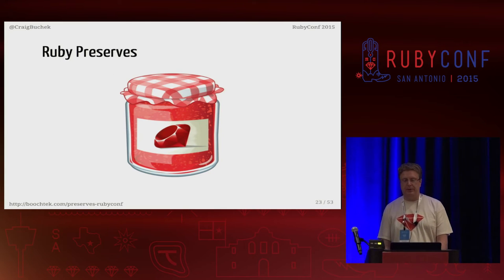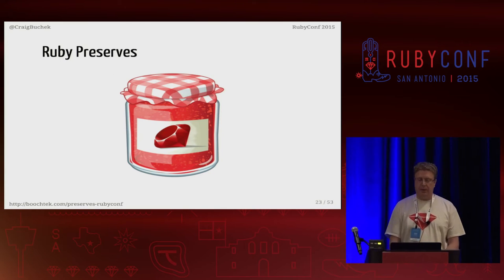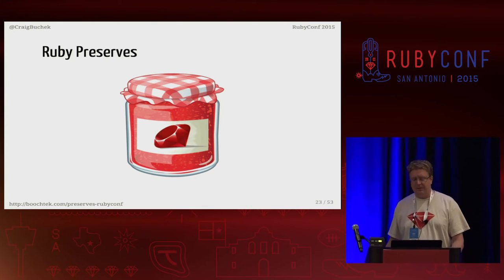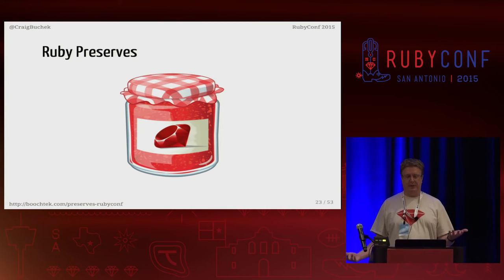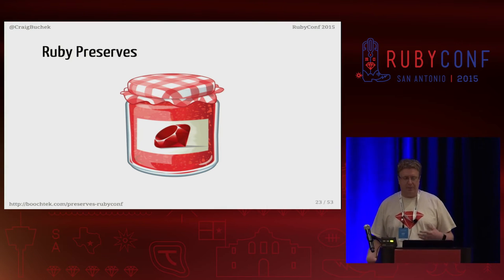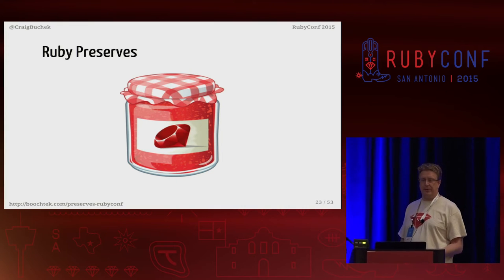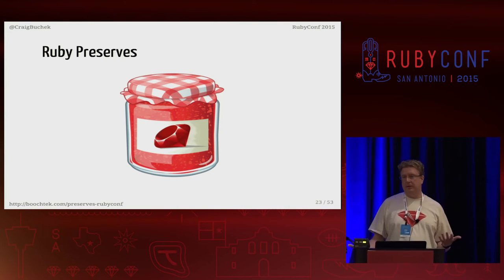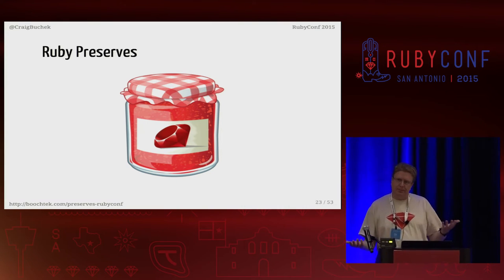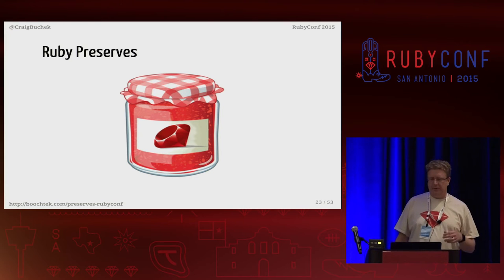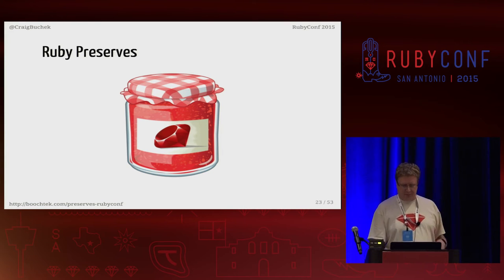I started Ruby Preserves by writing the README — or actually, first by coming up with a clever name. This is something called readme-driven development: before writing any code, I put all my motivations, opinions, and how I wanted the ORM to be used — basically the high-level API — into the README. It's changed some since then, but it's effectively pretty similar to what I envisioned originally.